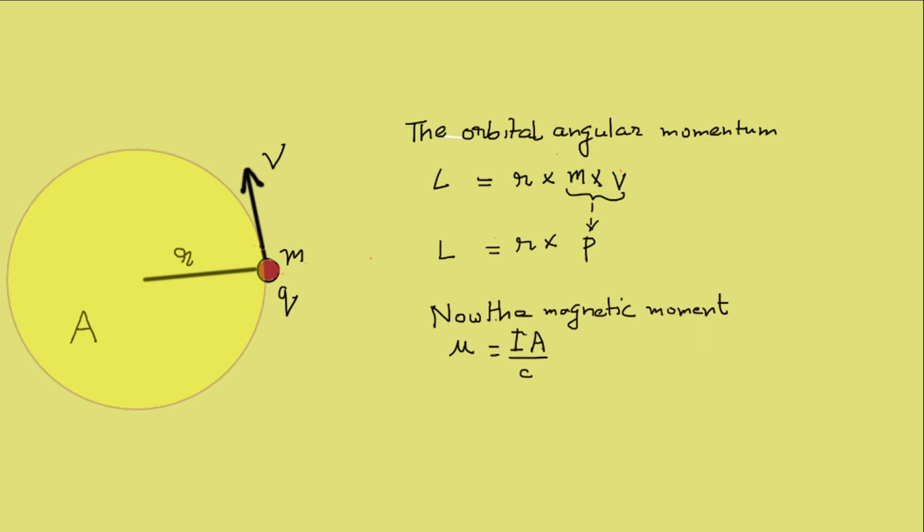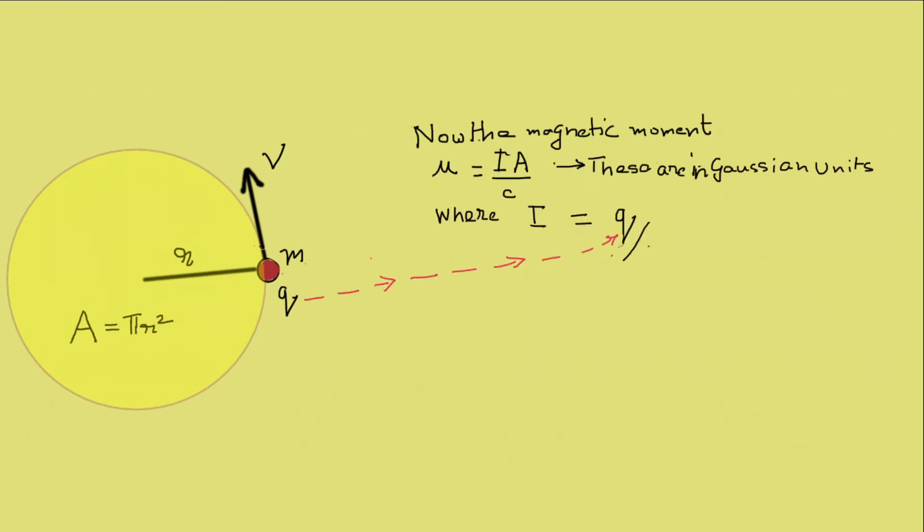Now the magnetic moment of the particle is mu which is equal to i into a by c where c is the velocity of light. c is needed here as we are using Gaussian units. If we were calculating in SI units we would not be needing c. mu is a vector quantity where i equals q by t where t is the time period of the revolution. t equals 2πr by v. The area a formed by the orbit is πr².